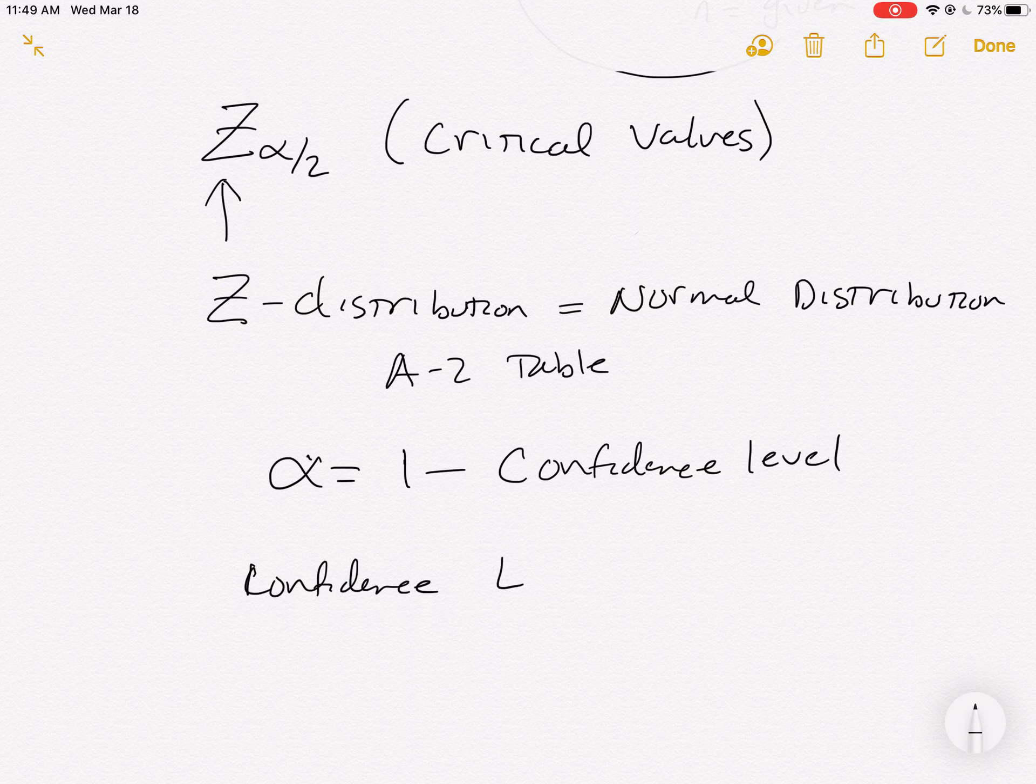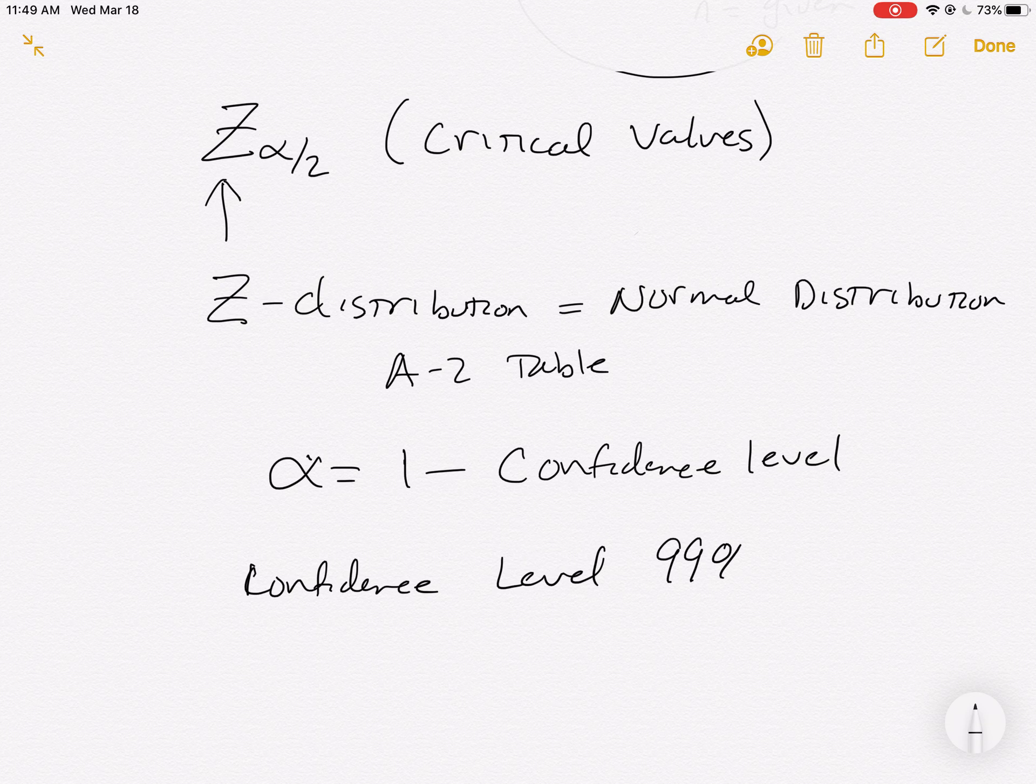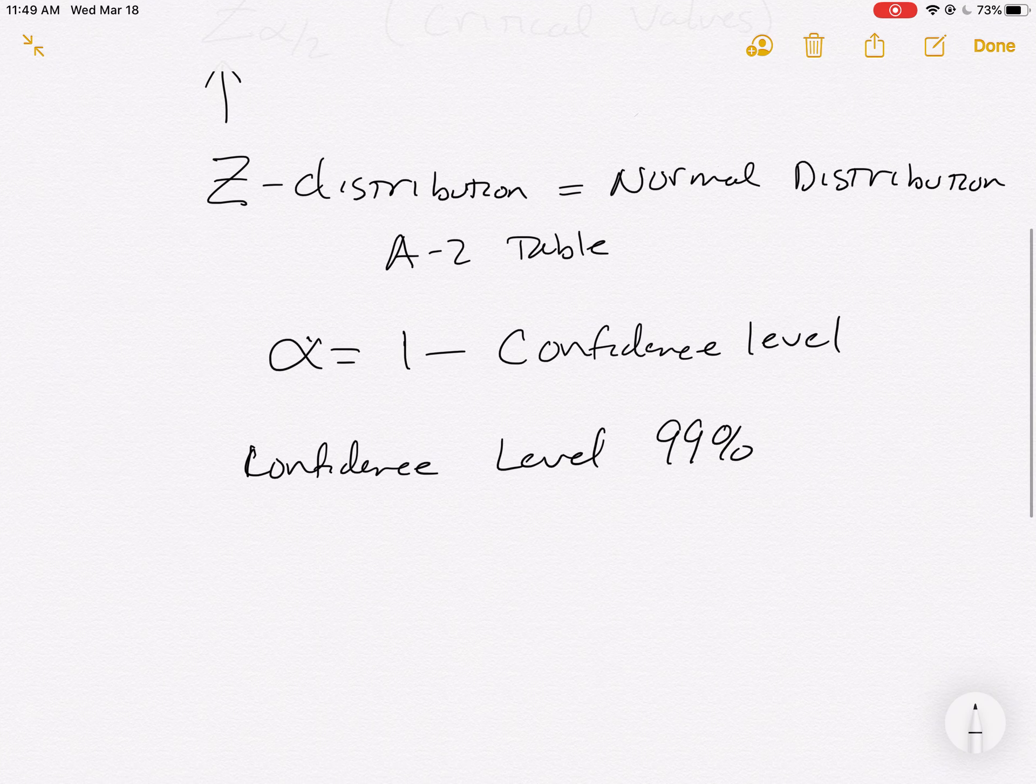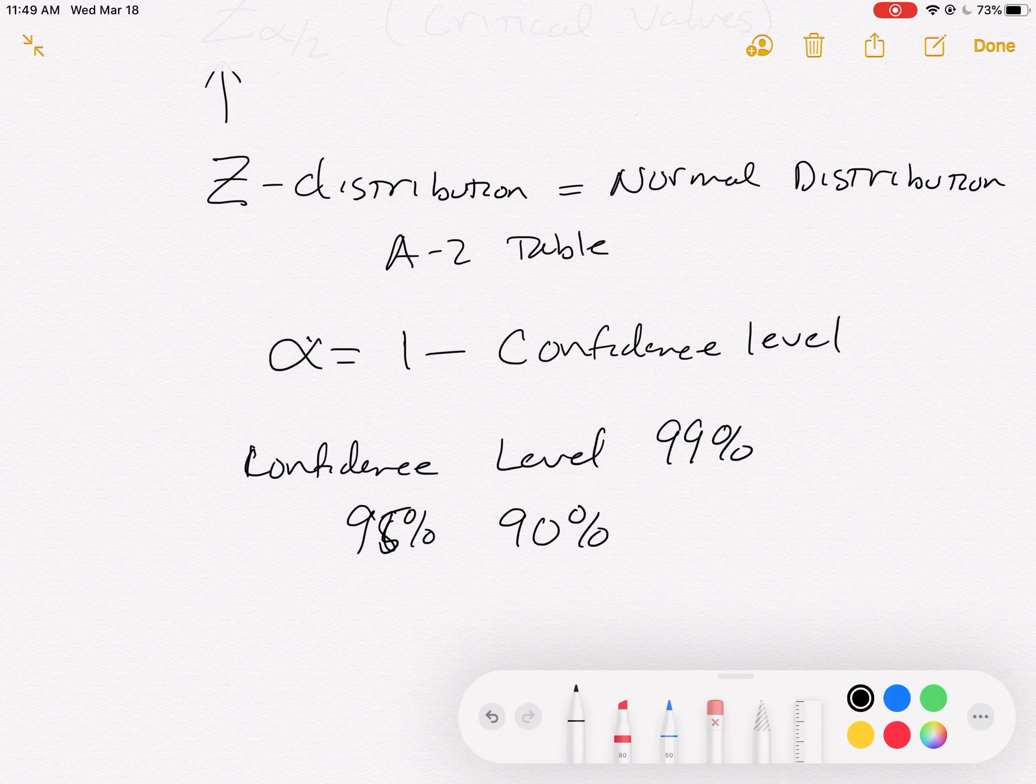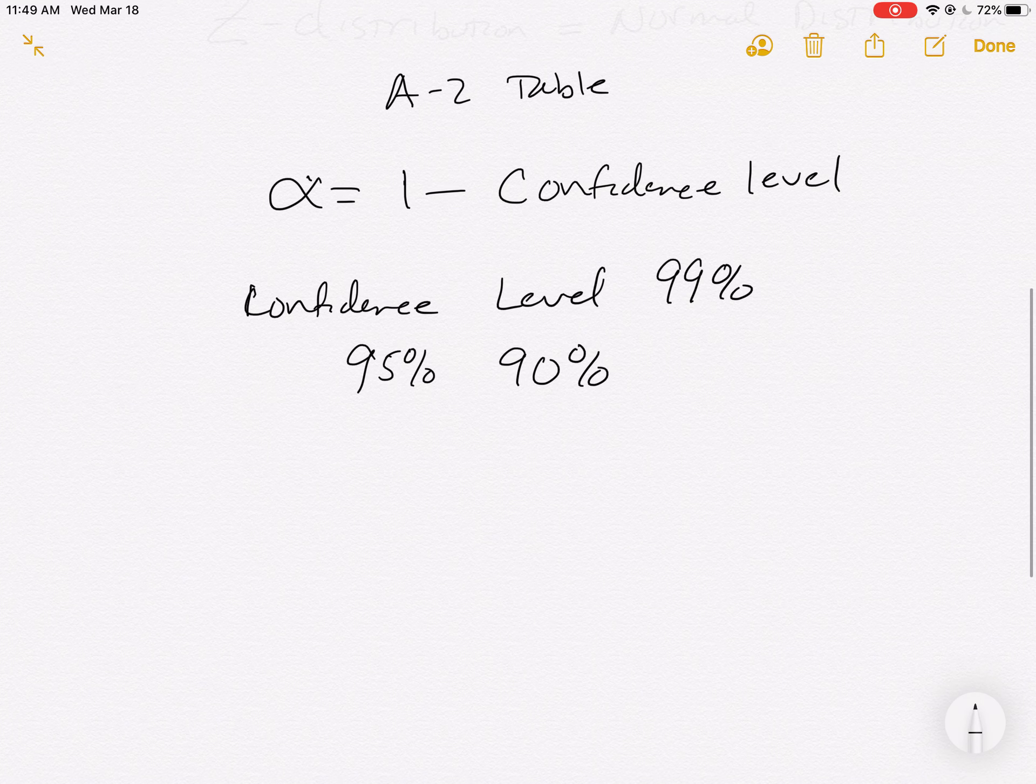The confidence level in the last one that we looked at was 99%. Other common ones are 95% and 90%. Those are very common ones, but we'll be able to do anything because that z chart is so robust.